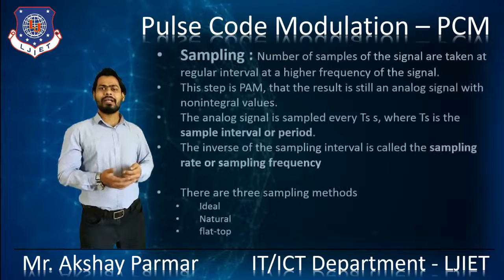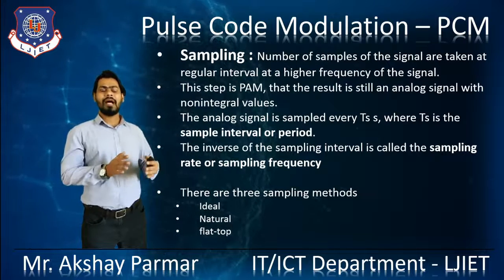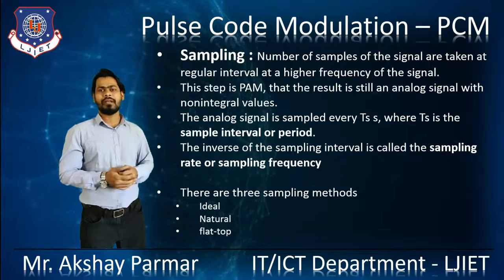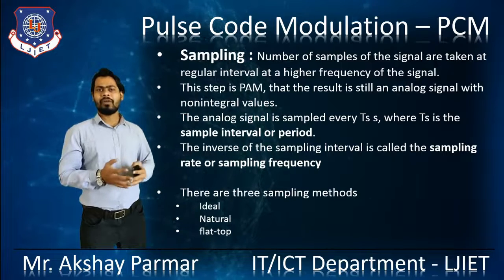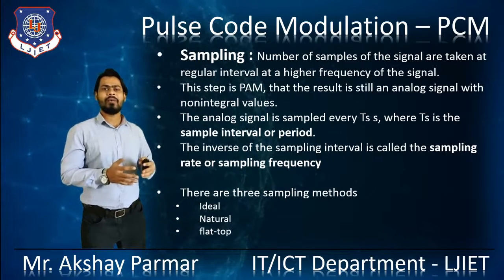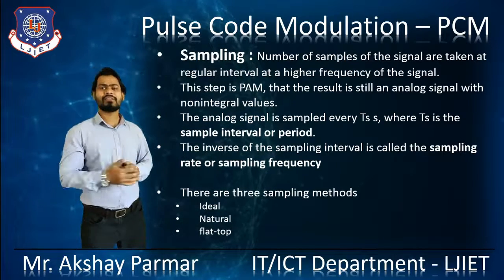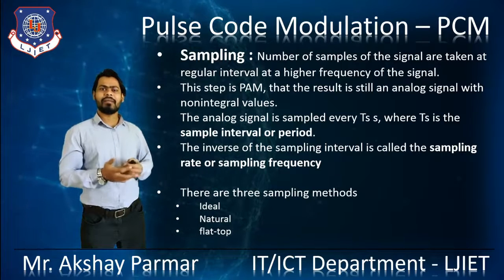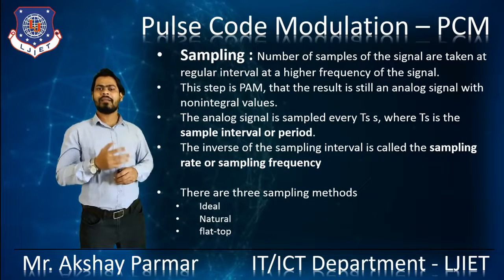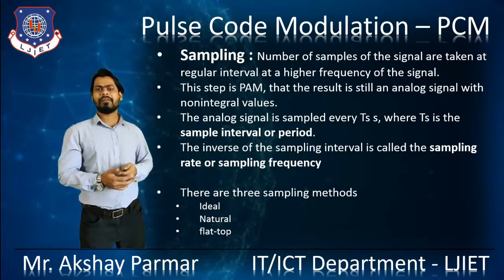Let's start with Sampling. The samples of the signal are taken at regular intervals at a high frequency. This step is Pulse Amplitude Modulation as seen earlier, and the result is still analog with a non-integral value. The Analog Signal is sampled at every Ts seconds, where Ts is the sample interval or period. The inverse of the sampling interval is called the sampling rate or sampling frequency. There are three major methods of sampling: Ideal, Natural, and Flat Top.